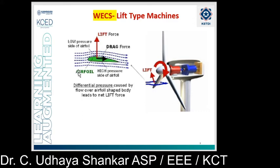Each machine has a tip speed ratio at which the maximum power coefficient can be achieved. Since wind speed is always changing, we want to vary the turbine speed proportionately in order to maintain the tip speed ratio at the CP max level. There are many types of rotors available — sailing rotor, multi-blade rotor, Dutch-type rotor, Savonius rotor, Darrieus rotor, Musgrove and Evans rotor — each having its own tip speed ratio, some suitable for electric power generation and some for pumping applications.